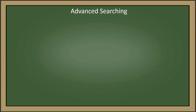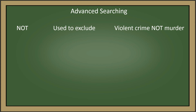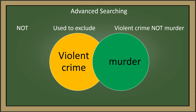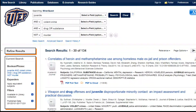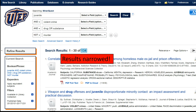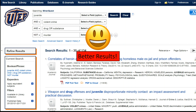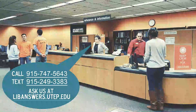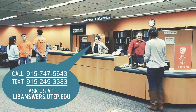Another advanced search technique you can use is NOT, which excludes search terms. So if I don't want MURDER in my results, I would type in VIOLENT CRIME NOT MURDER. By excluding the search term MURDER using NOT, we managed to narrow our results even further. Using these advanced search techniques in MinorQuest will give you better and more relevant results. If you have any questions, please call or text us, or ask us at libanswers.utep.edu. Thank you.